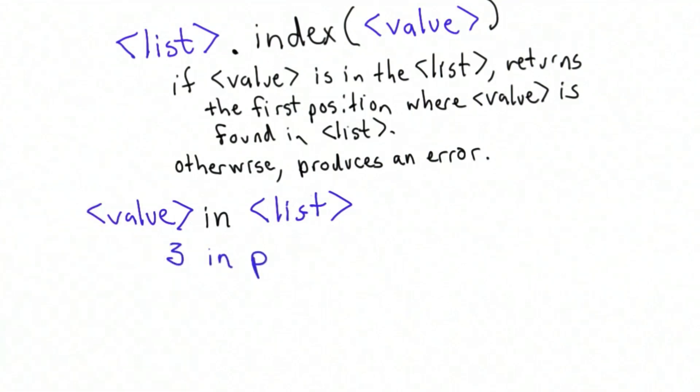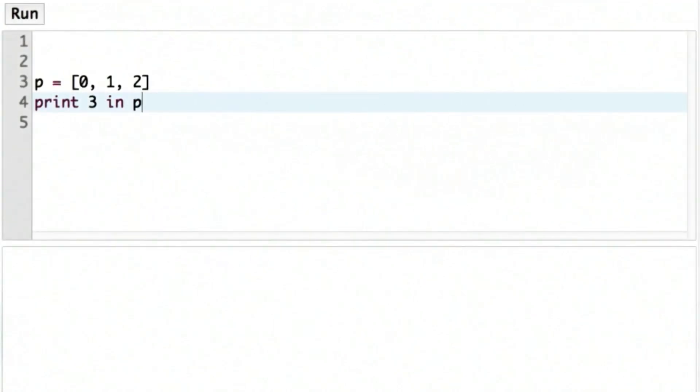So let's see how that works in the interpreter. Now I'm printing the result of 3 in p. 3 is not in the list, so it prints out false. If I change this to print the result of 2 in p, we get the value true.